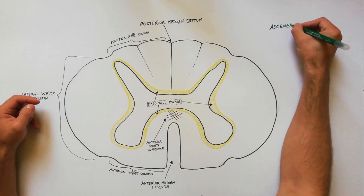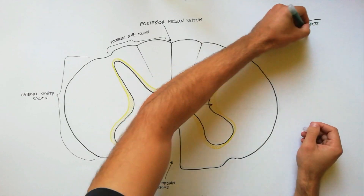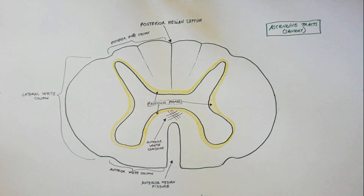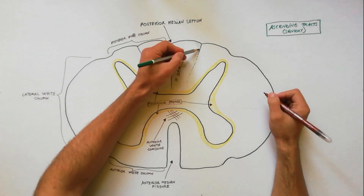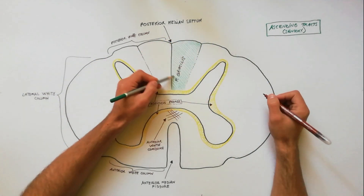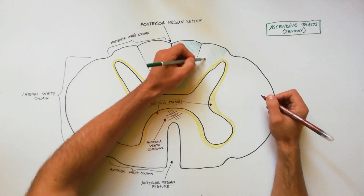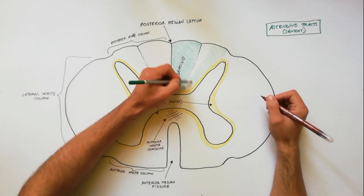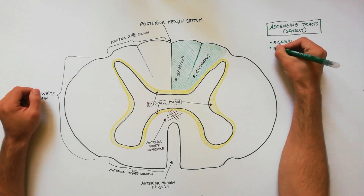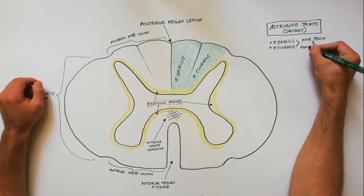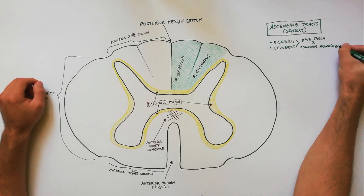Now we will start drawing the ascending tracts using the green color. In the posterior white column, we have fasciculus gracilis, placed parallel with the posterior median septum. Lateral to fasciculus gracilis, we have fasciculus cuneatus. These fasciculi are concerned with fine touch and conscious proprioception.